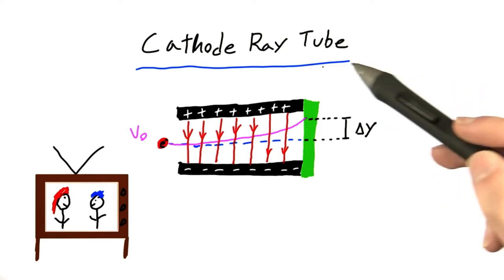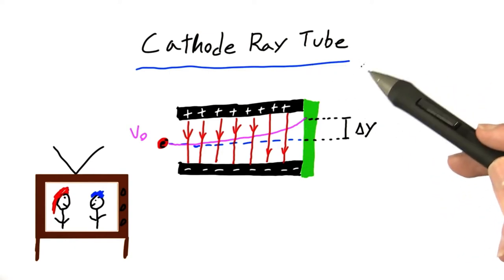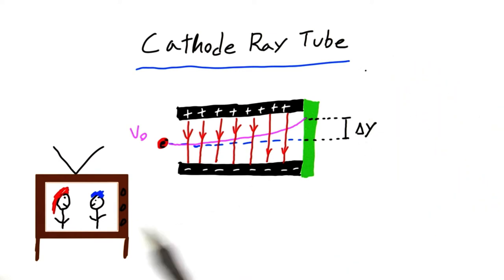For this problem, we're going to be talking about cathode ray tubes. And that may or may not be a name that means something to you, depending on how old you are. Cathode ray tubes used to be the main way we got televisions to work before we had LED, LCD, and plasma televisions. And let's investigate how exactly these tubes work.